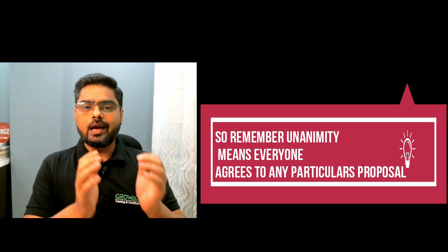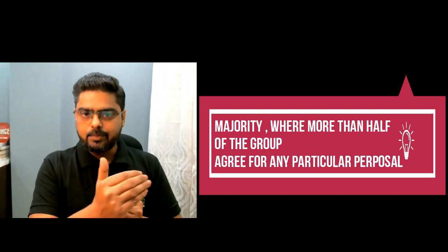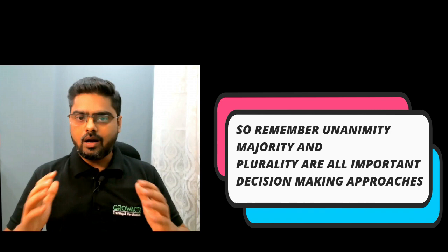Remember: unanimity means everyone agrees to any particular proposal. Majority is where more than half of the group agree for any particular proposal. Plurality means the largest group agrees, but it may not be a majority. Unanimity, majority, and plurality are all important decision-making approaches that help us reach consensus to finalize the decision in the project.